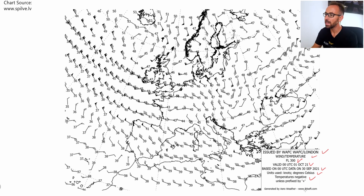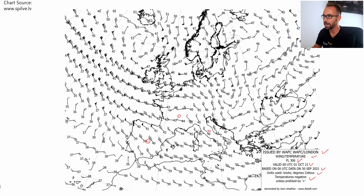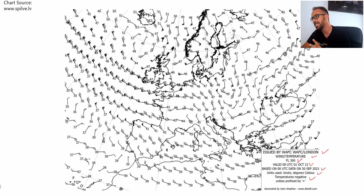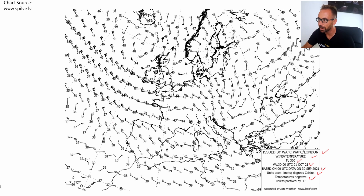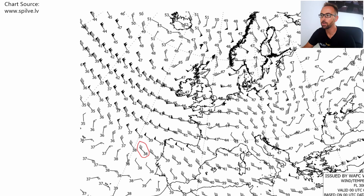So let's try to analyze and understand what these arrows, lines, and triangles mean. This chart covers the Eurozone pretty much — this is North Africa here, this is Spain, France, Italy, UK, Ireland, and so on. I hope you can locate yourself in this chart. Let's take one of these data points as an example. Once you know how to read one of them, you will be able to read all of them.